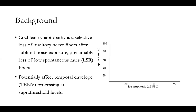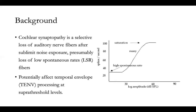Cochlear synaptopathy is a selective loss of auditory nerve fibers due to sublimit noise exposure or aging. Auditory nerve fibers can be classified based on their spontaneous rates. Fibers with high spontaneous rates have relatively low threshold — they are sensitive to soft sound, and they usually encode envelope information only up to about 40 dB SPL.